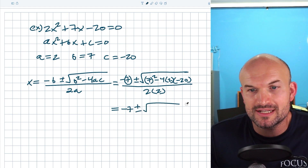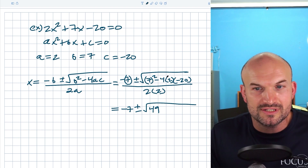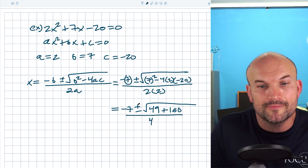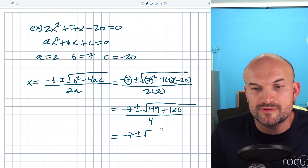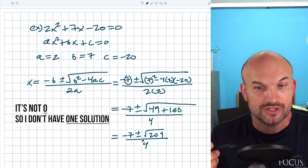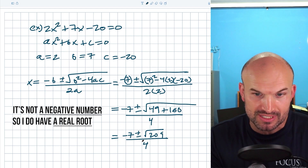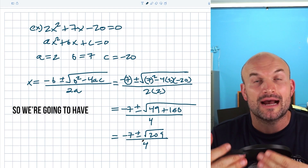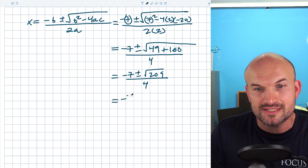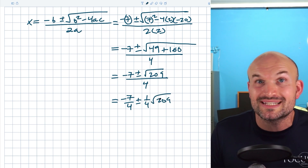Let's simplify: seven squared is 49. Be careful here — negative four times two times negative twenty gives positive 160, and two times two gives four. So we have negative seven plus or minus the square root of 49 plus 160, which is the square root of 209, all over four. The discriminant, 209, is not zero, not a perfect square, and not negative, so we have two real irrational roots. The answer can be written as negative seven over four plus or minus one-fourth times the square root of 209, depending on how your teacher wants it written.